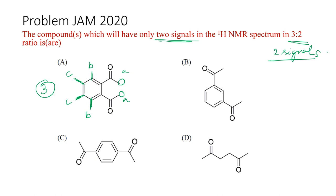For compound B, again you have 2 methyl groups assigned as A and A since they are similar. But looking at the ring, the 2 ortho positions are different from the other protons, and another group is also different. So B also does not have just 2 signals — B is not the answer.